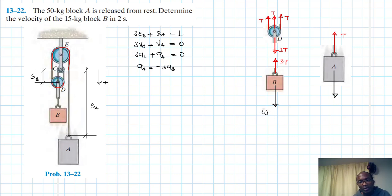We do have the weights of this one as well as this one. This one is WB which is just equal to MB times g, which is 15 by 9.81. WB is therefore 147.15 newtons. This one is WA which is just equal to MA times g, which is 50 times 9.81. Therefore WA is 490.5 newtons.